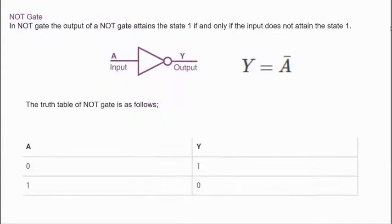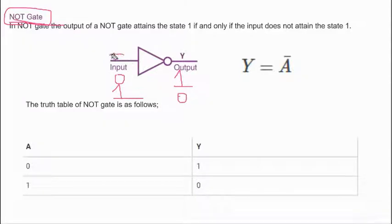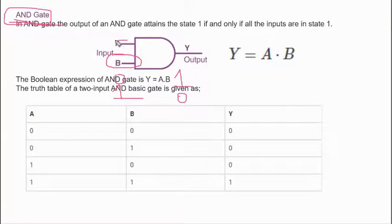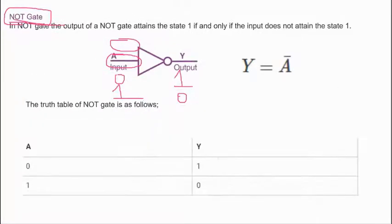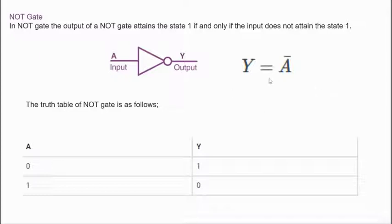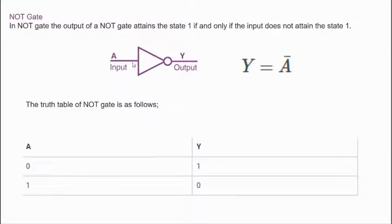Now this is the easiest gate — the NOT gate. NOT itself says 'not,' meaning the input should not be allowed through unchanged. If zero is provided it becomes one; if one is provided it becomes zero. Note that NOT gate has a single input, whereas OR and AND gates had double inputs. Since the name itself tells you it is the opposite, remembering the formula is very easy. The diagram is a triangle with a small circle (cherry) on the output.